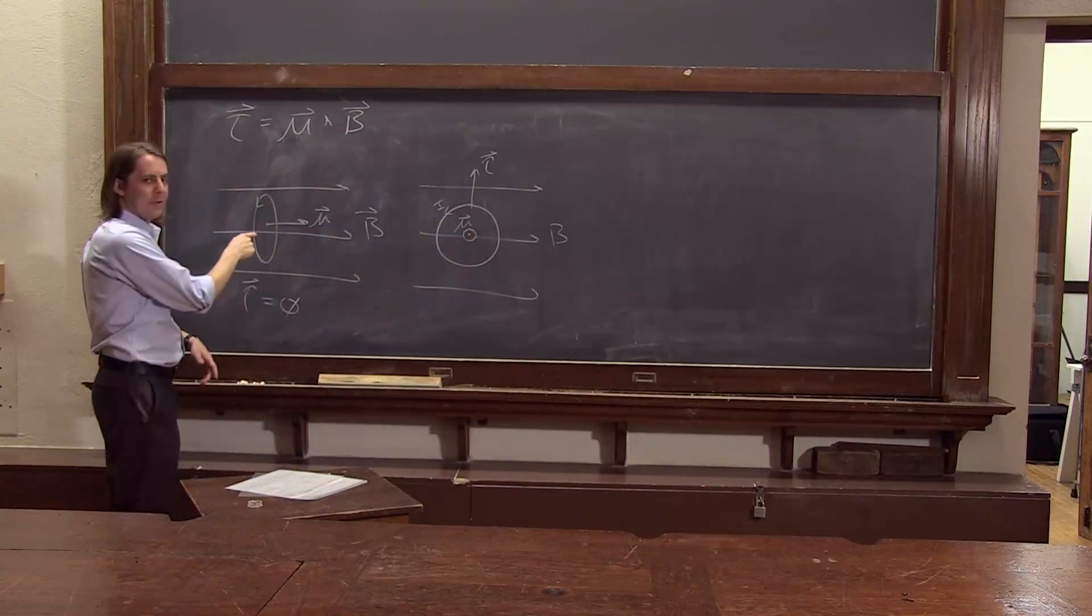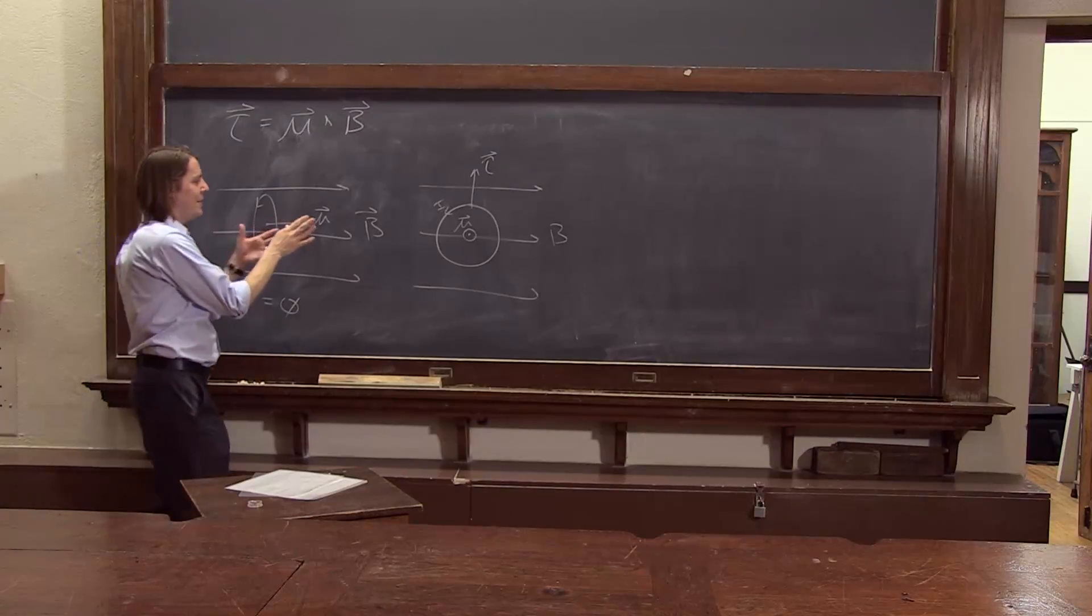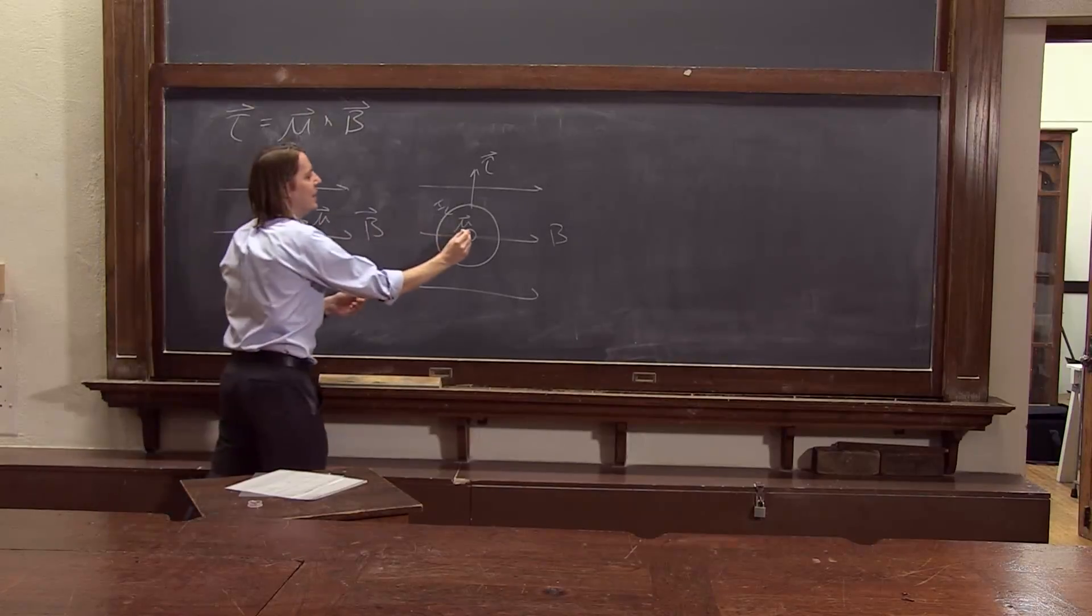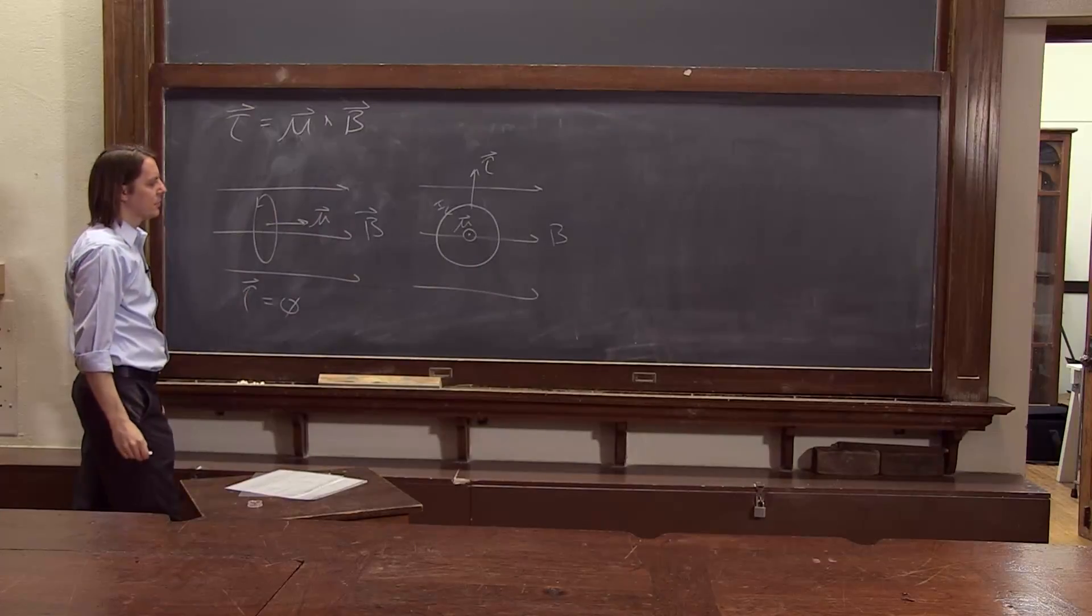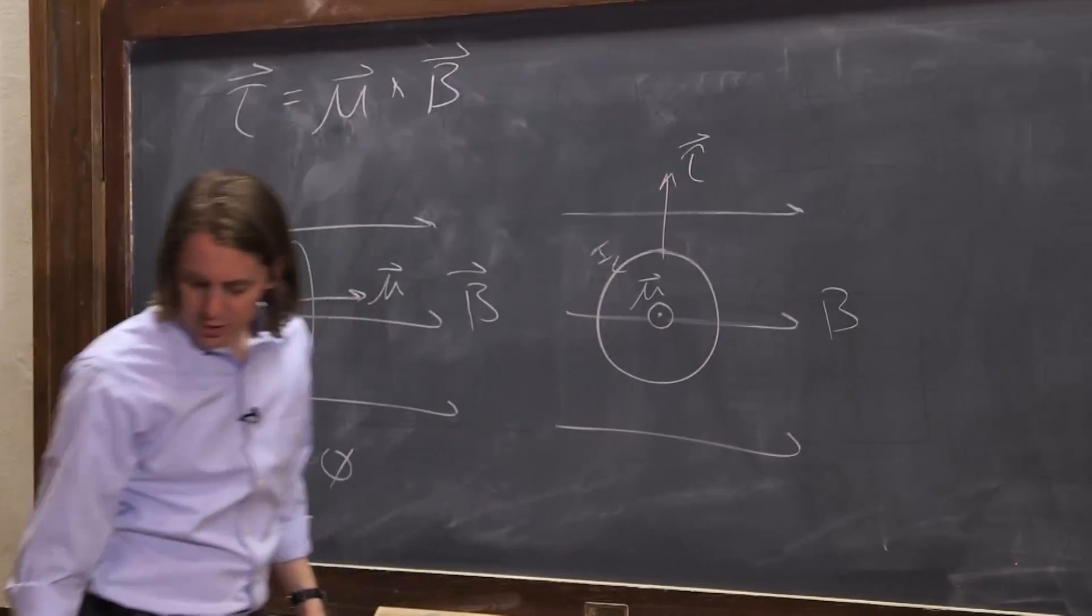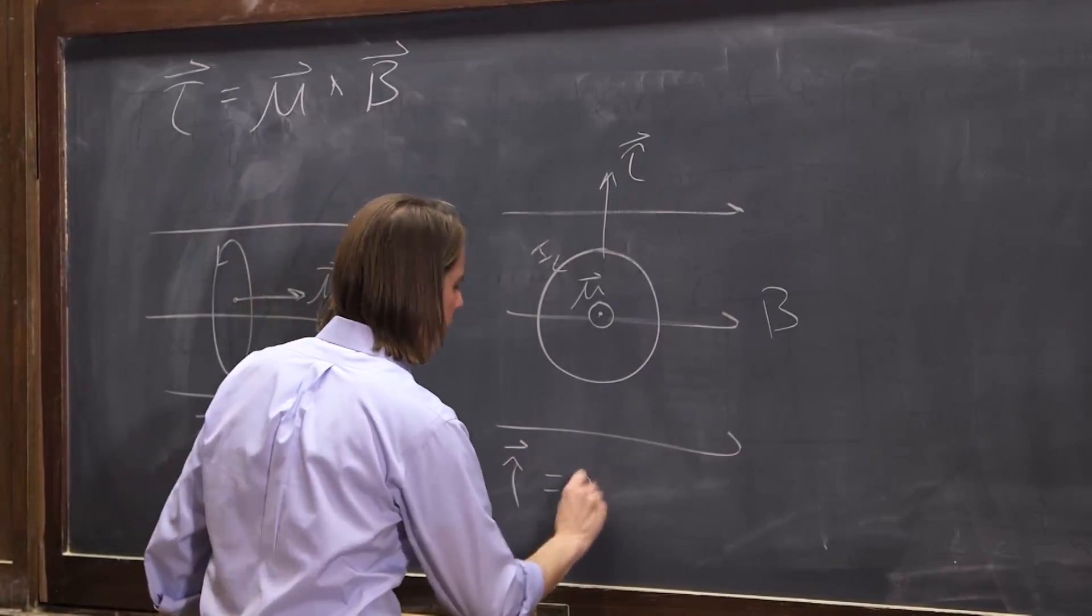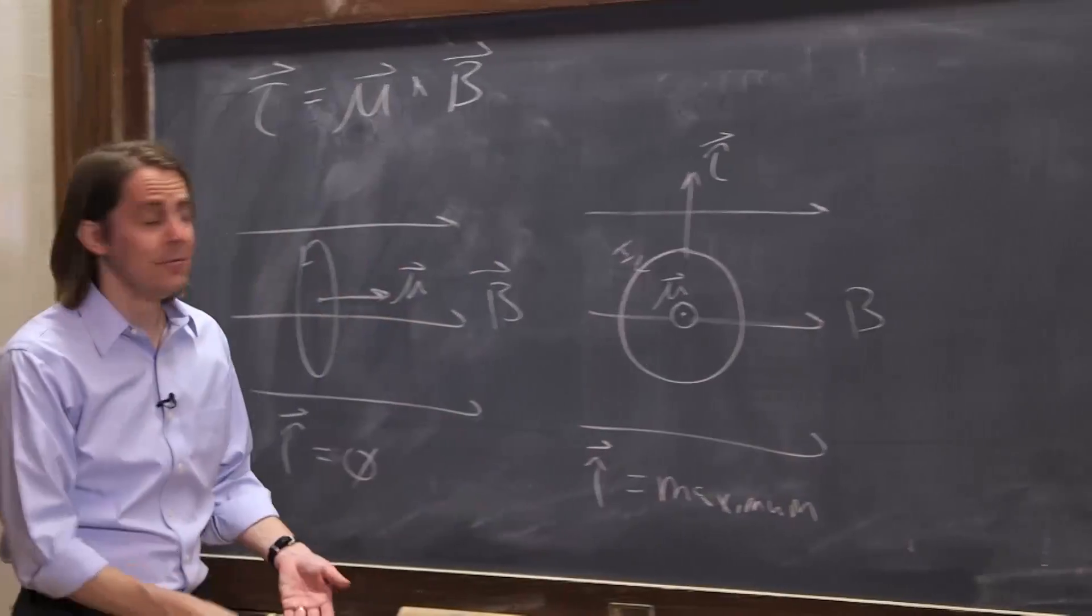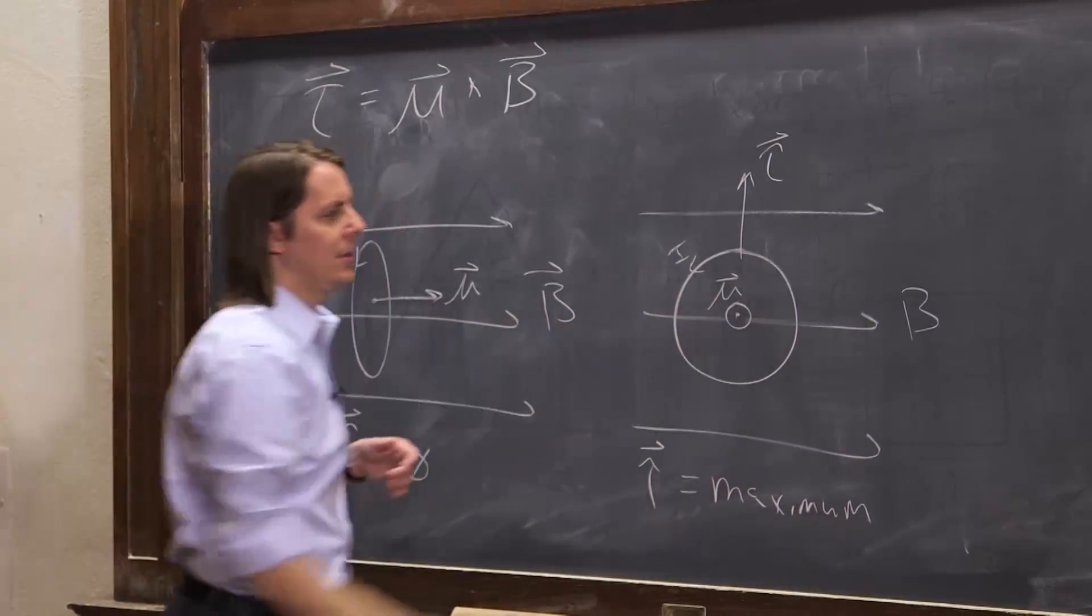It means it wants to get back over here. So here the torque was zero and it's happy to sit like this. If you turn it to where μ sticks out like this, the torque tends to push it back to this situation, back to that condition. Here the torque is actually maximum. If you consider up positive, that's the maximum torque when μ and B are at 90 degrees.